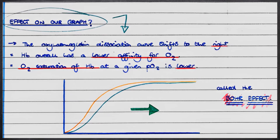We can portray this effect on our oxyhaemoglobin dissociation curve, which shifts to the right when we have a higher partial pressure of CO2. Haemoglobin overall has a lower affinity for oxygen, and therefore haemoglobin is less saturated at a given partial pressure of oxygen. This is known as the Bohr effect.